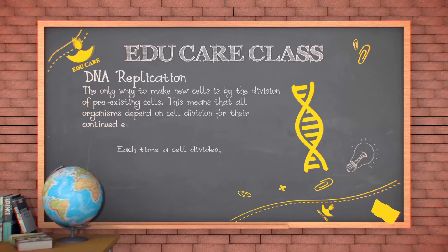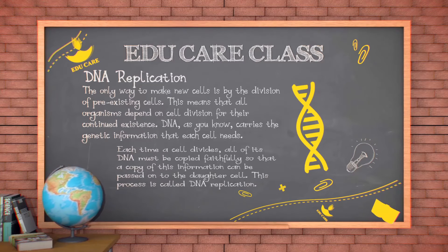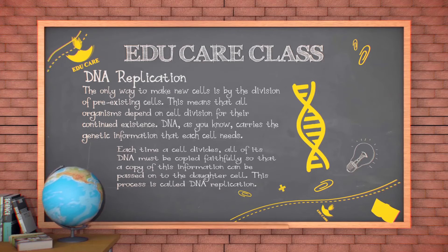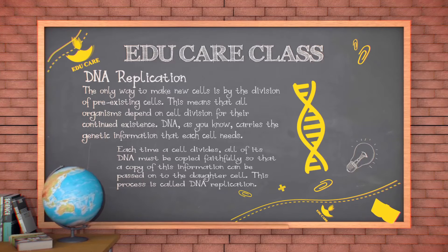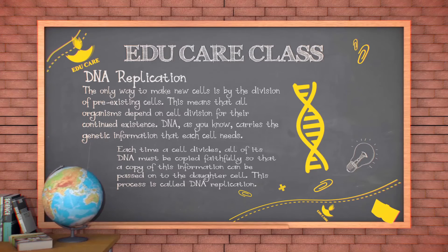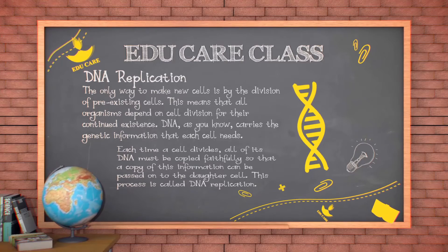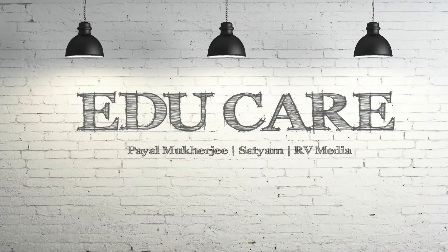The only way to make new cells is by the division of pre-existing cells, so all organisms depend on cell division for their continued existence. DNA carries the genetic information that each cell needs, so each time a cell divides, all of its DNA must be copied faithfully so that a copy of this information can be passed on to the daughter cell. This process is called DNA replication.